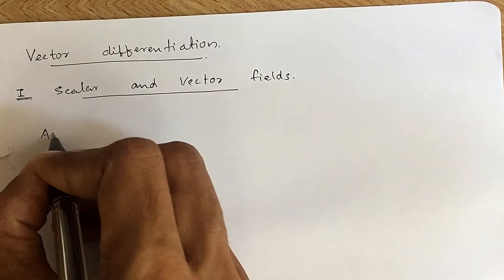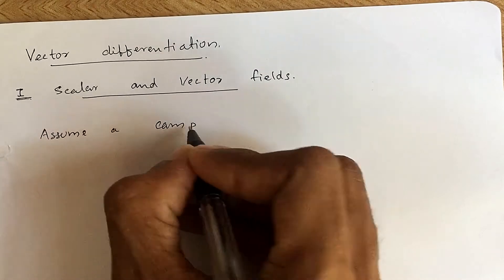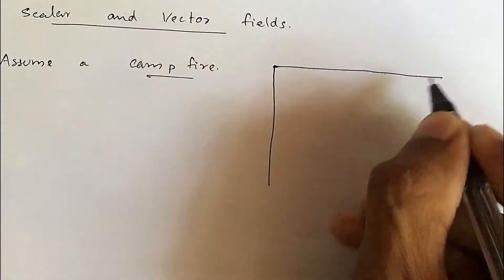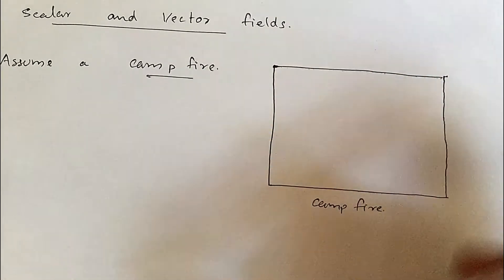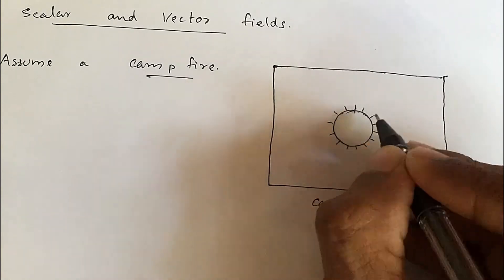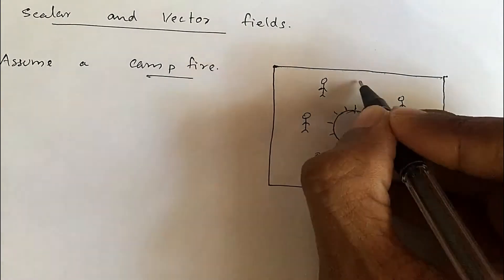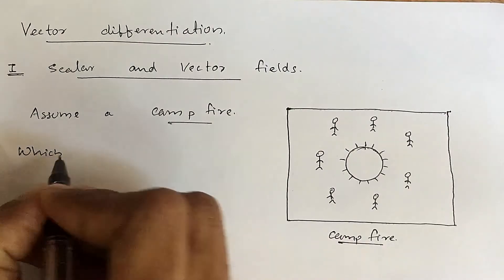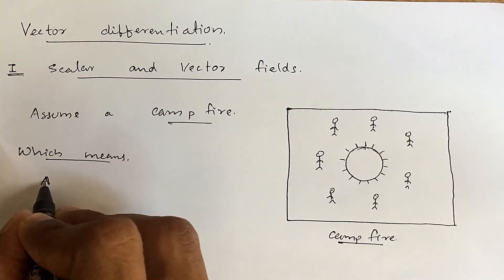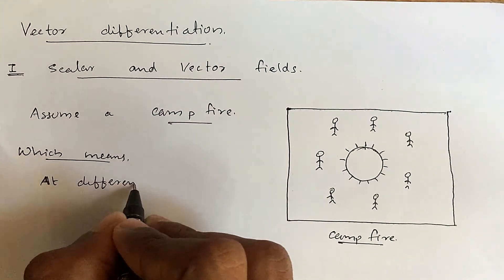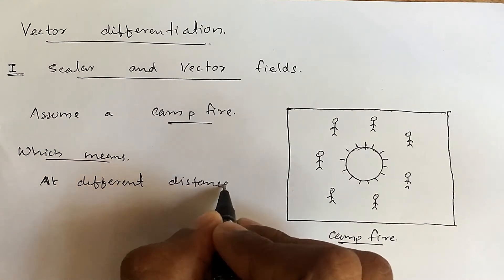Assume that you are participating in a campfire. Let this be a campfire. The fire is arranged at the center and people are standing around it at their comfort, which means at different points or distances, the heat felt is different.